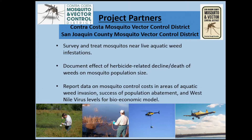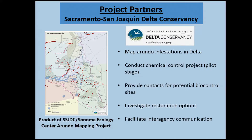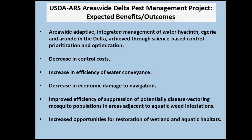We have regular meetings to bring stakeholders together and synergize efforts toward better, sustainable delta-wide control of water hyacinth, Egeria, and arundo. These technologies could be applied to other weeds as well. I'm happy to take questions during the break.